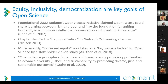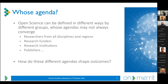If you look back to the Budapest Open Access Initiative — the foundational text of open access — you can see very utopian language about sharing knowledge between rich and poor and uniting humanity in a common intellectual conversation. In Michael Nielsen's book Reinventing Discovery, there's a whole chapter devoted to the democratization that can come through networked science. More recently, increased equity was listed as a key success factor in a stakeholder-driven study. Inclusivity has always been claimed as one of the central goals of open access.